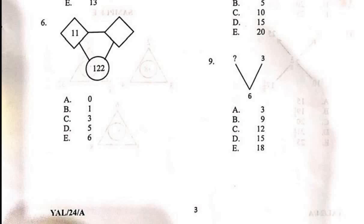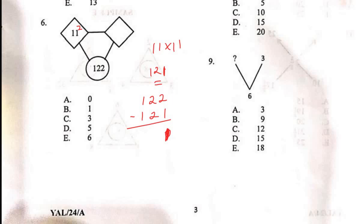For Question 6, using the same method: 11² = 11 × 11 = 121. A quick way: 1+1 = 2, put it in the middle, so 11 × 11 = 121. The total is 122, so I subtract 121: 122 − 121 = 1. So the missing value is 1, since 1² = 1 and 121 + 1 = 122. The correct option is B, which is 1.